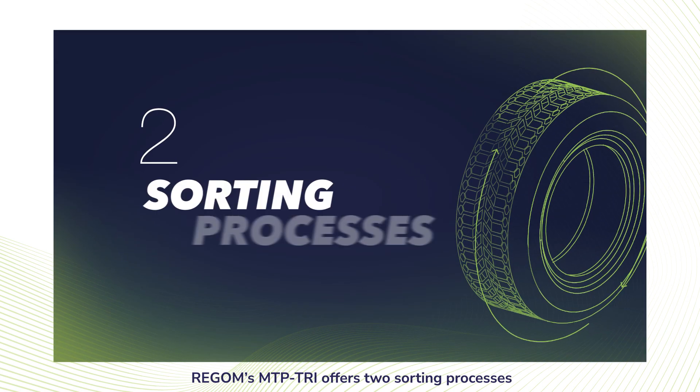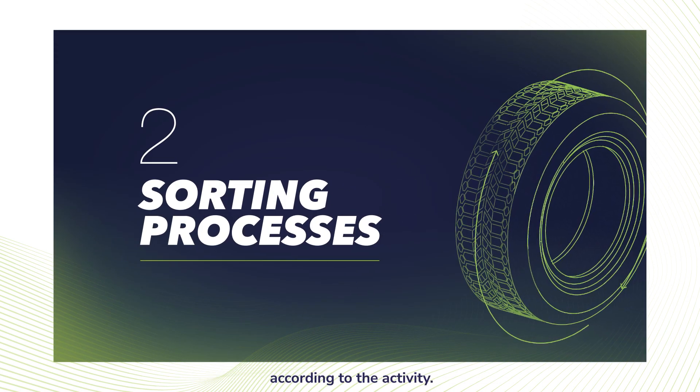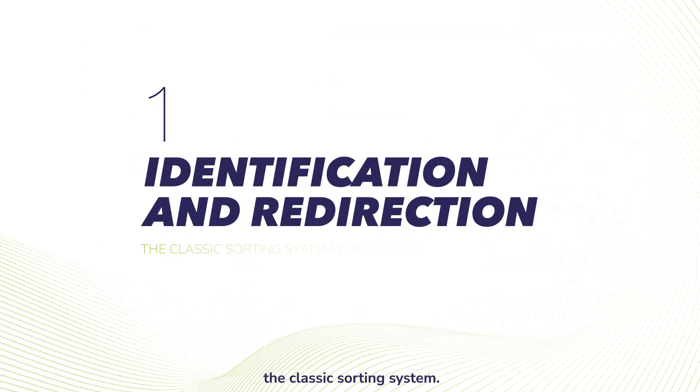REGOM's MTP-TRI offers two sorting processes according to the activity: identification and redirection, the classic sorting system.